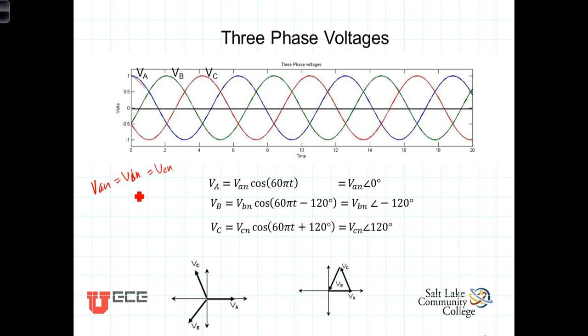Now the interesting characteristic of this is that the sum of these three things—the actual phasor VA plus VB plus VC—equals zero.